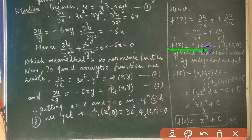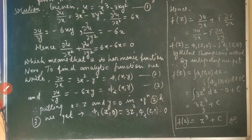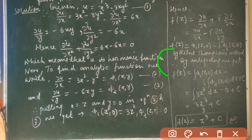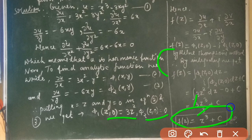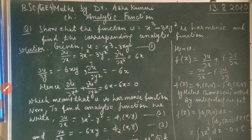We discussed the Milne-Thomson method in the previous lecture. So f'(z) = φ₁(z, 0) - i·φ₂(z, 0) = 3z² - i·0 = 3z². Integrating, f(z) = ∫3z² dz + c = z³ + c. Therefore the required analytic function corresponding to u = x³ - 3xy² is f(z) = z³ + c.